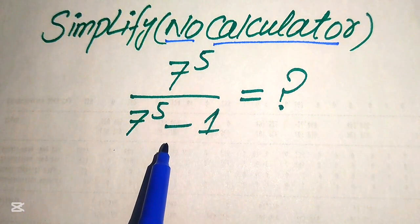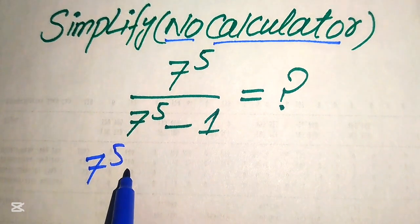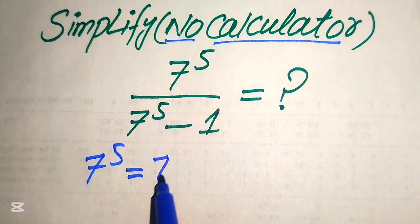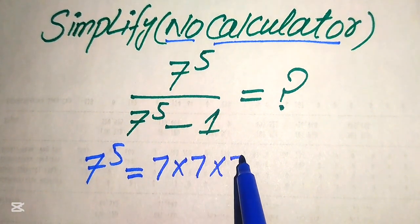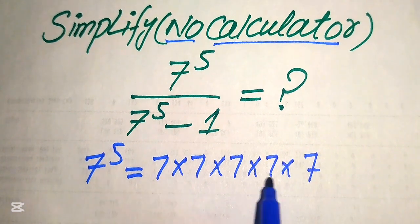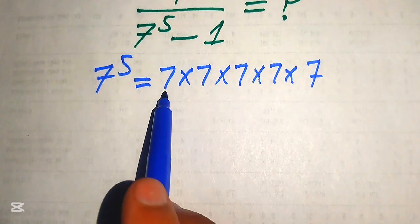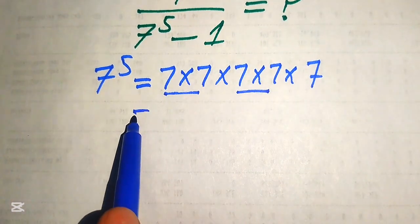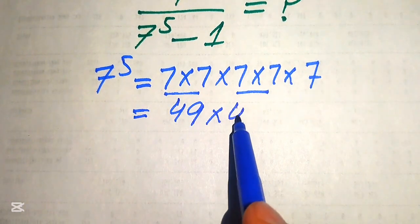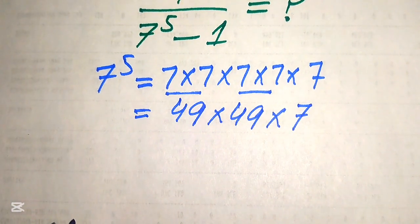In order to simplify this algebraic expression, first we need to find the value of 7 to the power of 5. The meaning of 7 to the power of 5 is that we multiply 7 with itself 5 times. So 7 to the power of 5 means 7×7×7×7×7. In the next step, we multiply these in pairs: 7 times 7 becomes 49, and another 7 times 7 becomes 49, and we have the remaining 7.